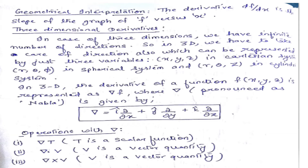The same thing we had talked about in three dimensions as well. When we talk about three dimensions, we have an infinite number of directions. So in three dimensions, we have to take care of direction also, and it can be represented by three variables: x, y, z in the Cartesian system; r, theta, phi in the spherical system; r, theta, z in the cylindrical system. So in three dimensions, the derivative of the function will be represented as delta f. This delta, that is the inverted triangle, is pronounced as nabla, and it is given by i-hat del/del-x plus j-hat del/del-y plus k-hat del/del-z.